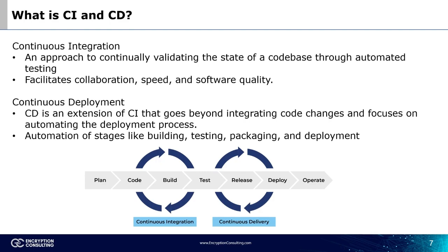CD includes automation of stages like building, testing, packaging, and deployment. A full CI-CD pipeline involves planning, coding, building, testing, releasing, deploying, and operating.